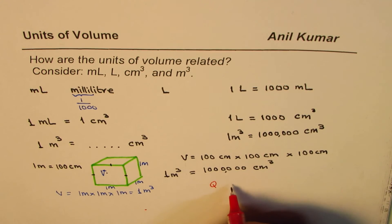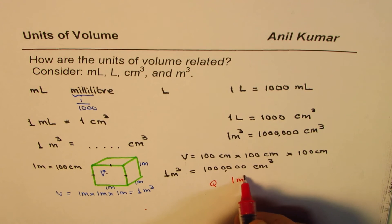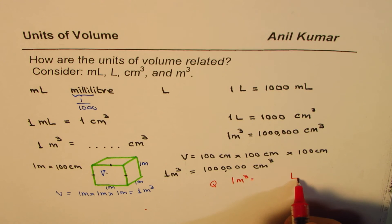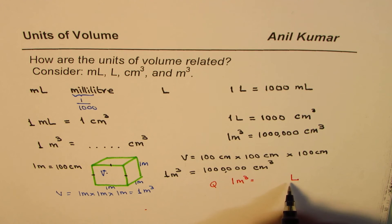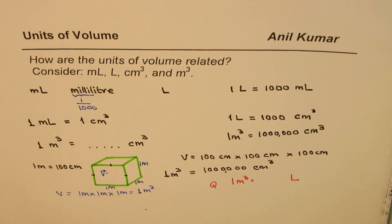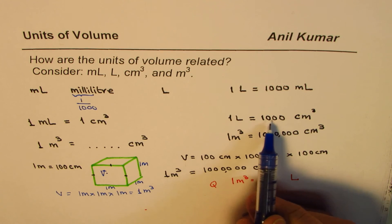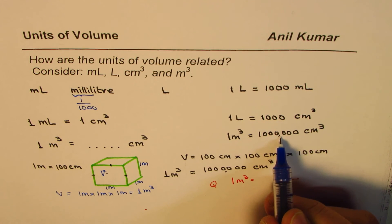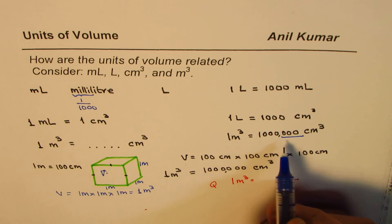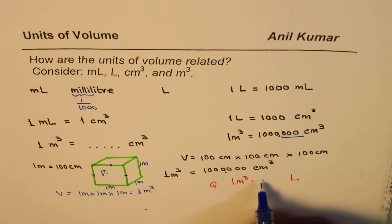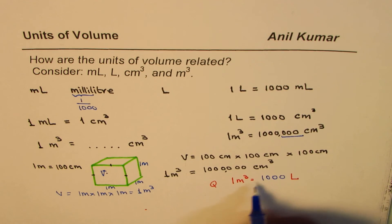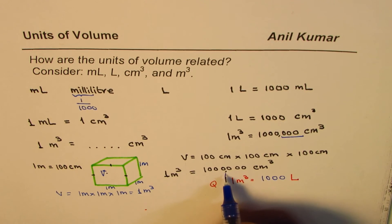Here is a question for you: we know all these relations — can you tell me one meter cube equals how many liters? You can pause the video, answer the question, and then check. We know one liter is one thousand centimeter cubes, and one meter cube is one million centimeter cubes, so one meter cube equals one thousand liters.